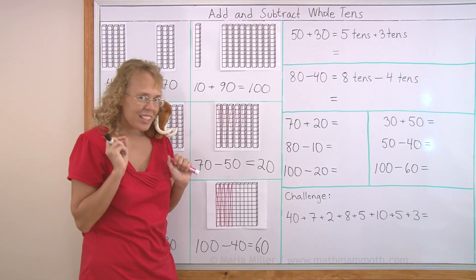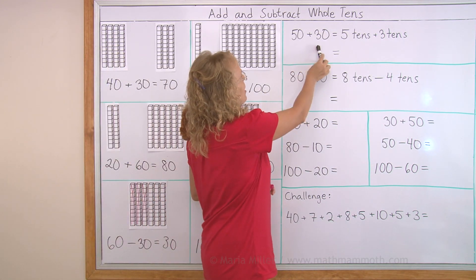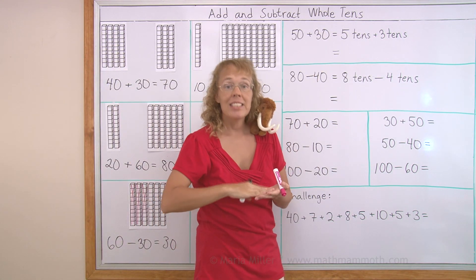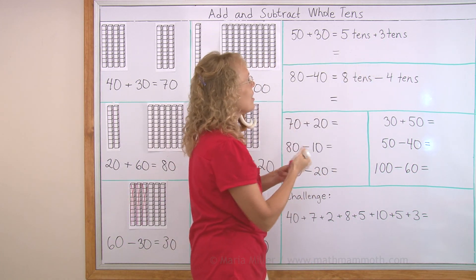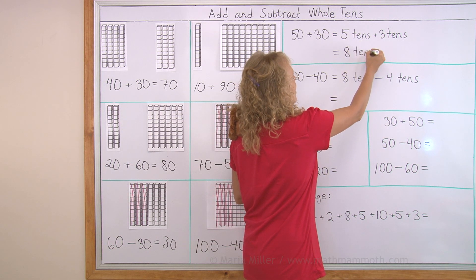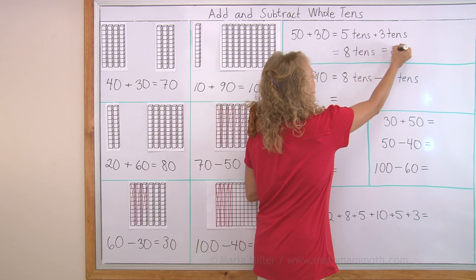If you didn't catch it already, here is the principle. Fifty plus thirty is the same as five tens plus three tens. You add five plus three. So that is eight. But they are eight tens. You're adding tens. Eight tens is eighty.